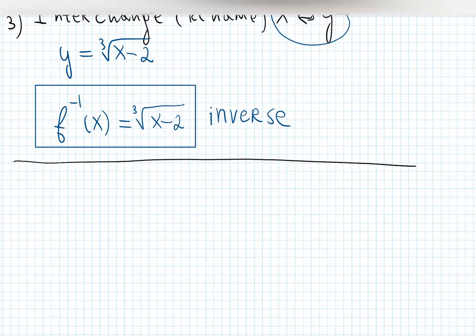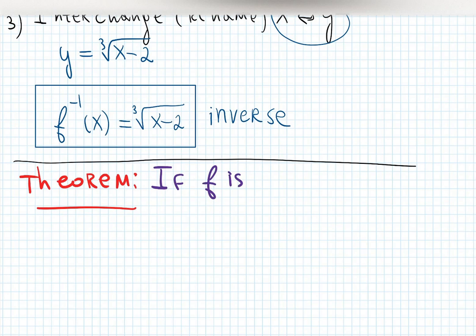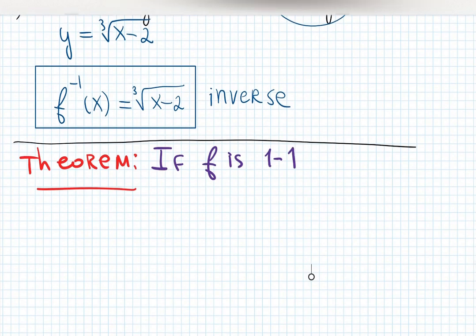How to find derivative theorem tells us there's a shortcut to find the derivative of the inverse function. The theorem says if f is one-to-one, meaning it has an inverse function, and is differentiable.